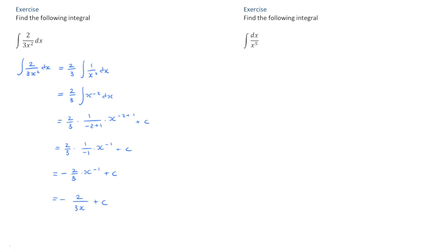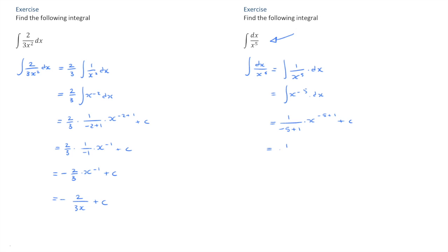One more example - we need to find the integral shown here. This often off-puts a few people at first. It's important to realize that when we write dx on the numerator, as we've done here, this is the same thing as writing 1 over x to the power of 5 times dx. Now that we've seen that, we can write this as a negative power of x, that's x to the power of negative 5. Using the power rule, this equals 1 over negative 5 plus 1, times x to the power of negative 5 plus 1, plus some constant c. That leads us to 1 over negative 4 times x to the power of negative 4 plus c, which equals negative 1 quarter times x to the power of negative 4 plus c.